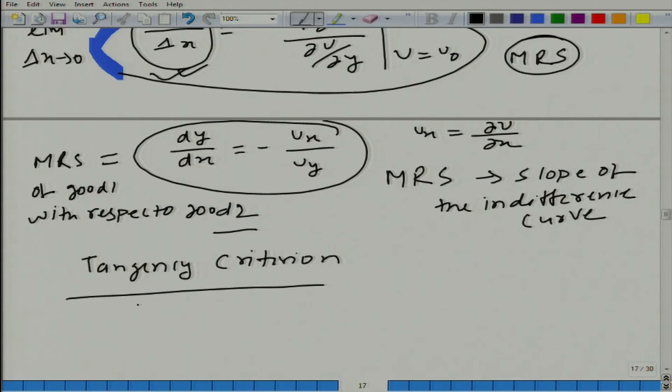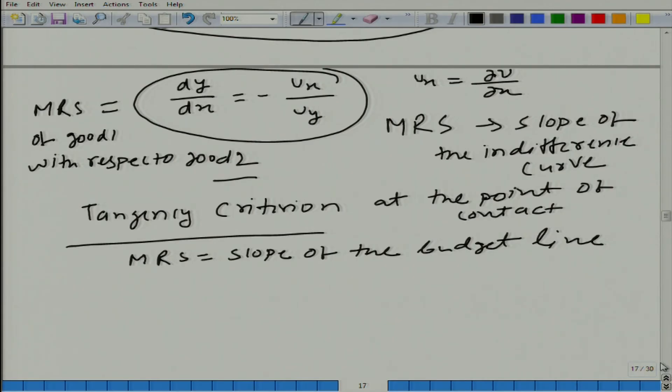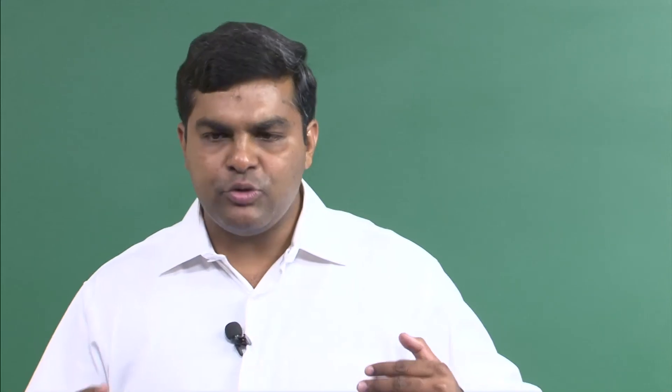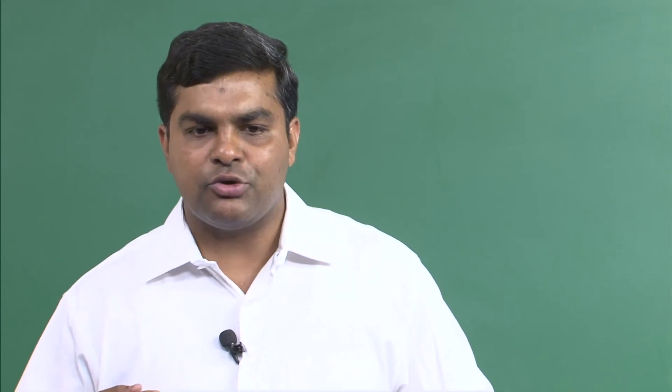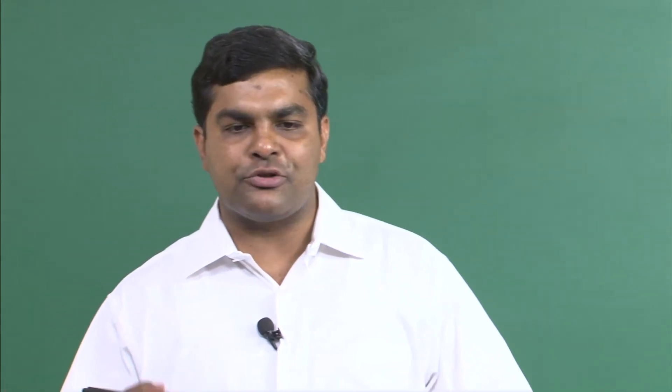So, what we have talked about is that MRS has to be equal to slope of budget line at the point of contact. Is it clear? We will do this thing again using just argument, so that we not want to only learn the mathematics, but also economic intuition behind it. But one thing at a time.